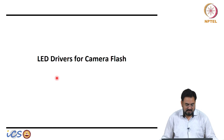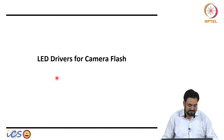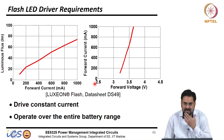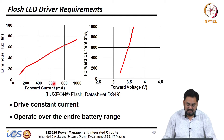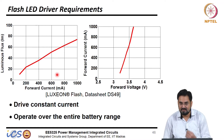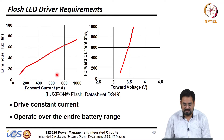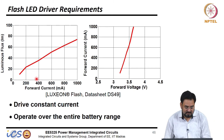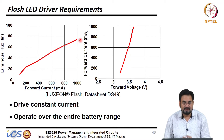Let us move to LED drivers for camera flash. Just like we have a backlight it requires white LEDs, but the current required is much higher. The full-scale current in backlight was 20 milliamp only, but for this flash we need much brighter because we are taking a photograph. The current can go as high as 1 amp.